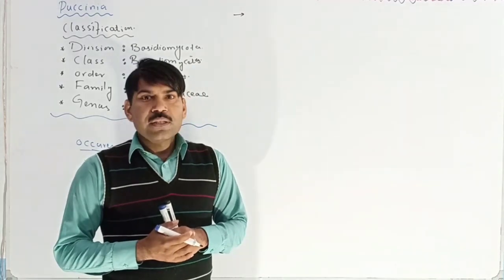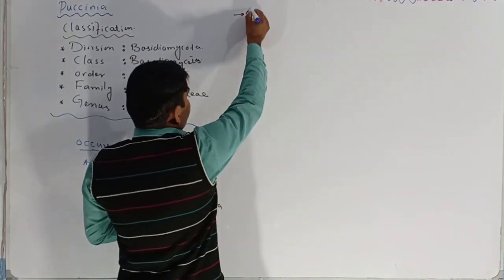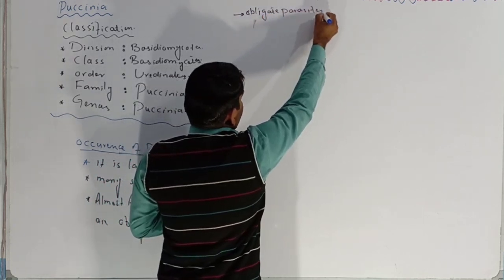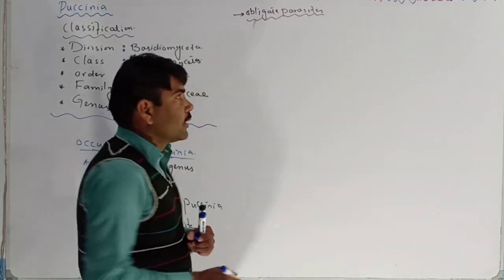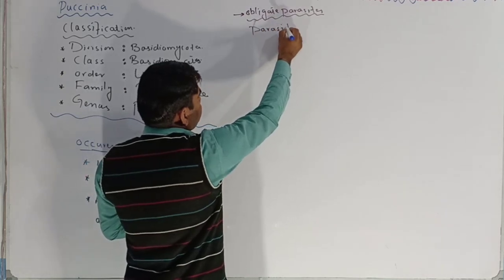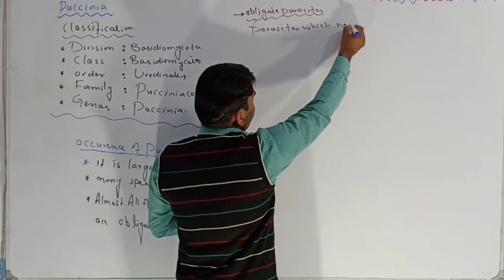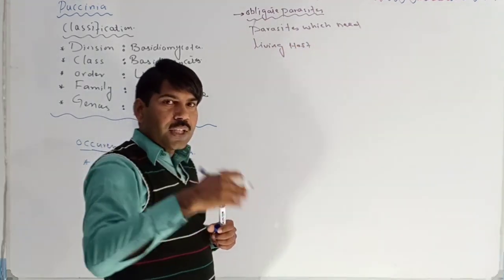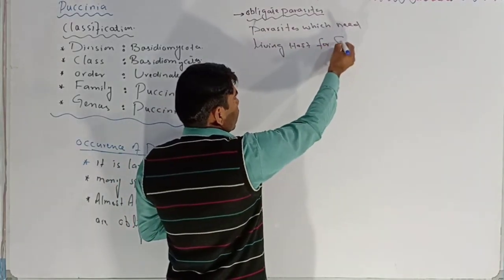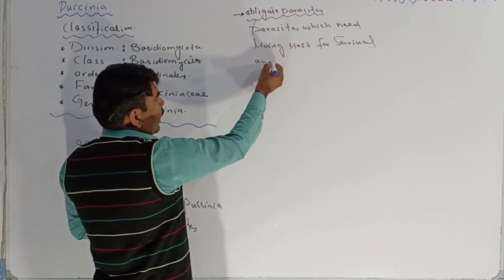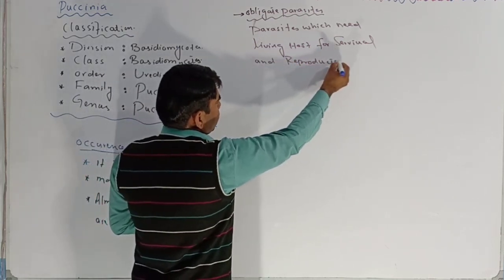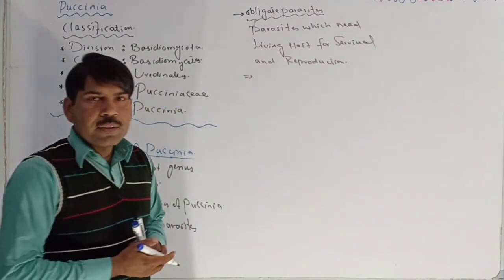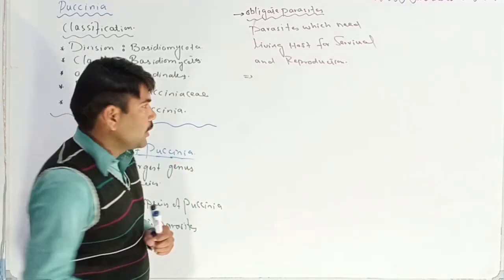Such type of parasites are known as obligate parasites. These are the parasites which need a living host for their survival as well as reproduction. An example of this is Paksinia graminis, which is a species of the genus Paksinia.